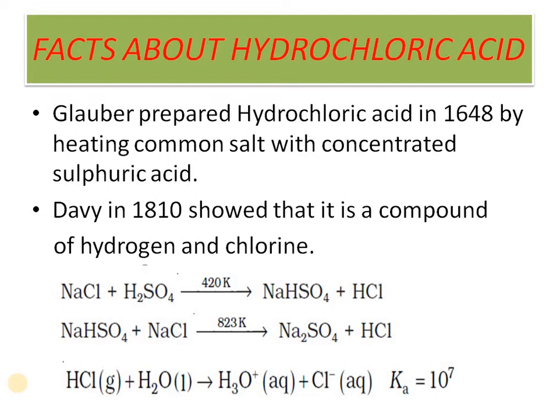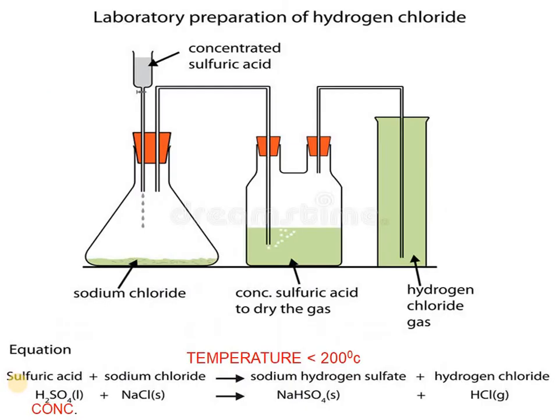To produce hydrochloric acid, we need to dissolve this HCl gas in water. HCl gas when dissolved in water gives rise to hydrochloric acid, forming ions like hydronium ion and chloride ions. The solution gives a dissociation constant Ka equal to 10⁷. This is the lab method of production of hydrogen chloride — the gas is produced and when it comes in contact with water, it forms hydrochloric acid.